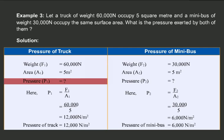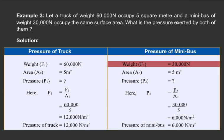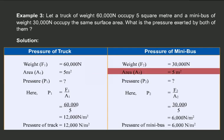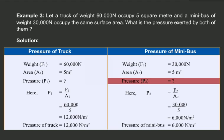Similarly, for the pressure of the minibus, the weight given, or the force, that is F2, is equal to 30,000 Newton. The area, denoted by A2, is equal to 5 meter square, and we have to calculate the pressure, or P2, exerted by the minibus.